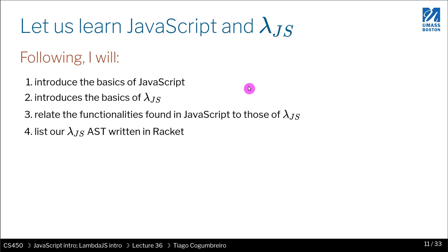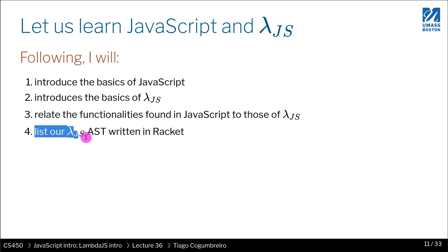So in the rest of this lecture, what I want to do is introduce the basics of JavaScript, kind of like I introduced the basics of Racket in the first few lessons. Then I'm going to introduce the basics of LambdaJS, which will be very close to what you've learned — very similar to the language from homework 4. Then I'm going to relate the functionalities found in JavaScript with those found in LambdaJS. And finally, I'm going to end the lecture by listing the LambdaJS AST written in Racket, just so you see that it's not very far from what you already know.